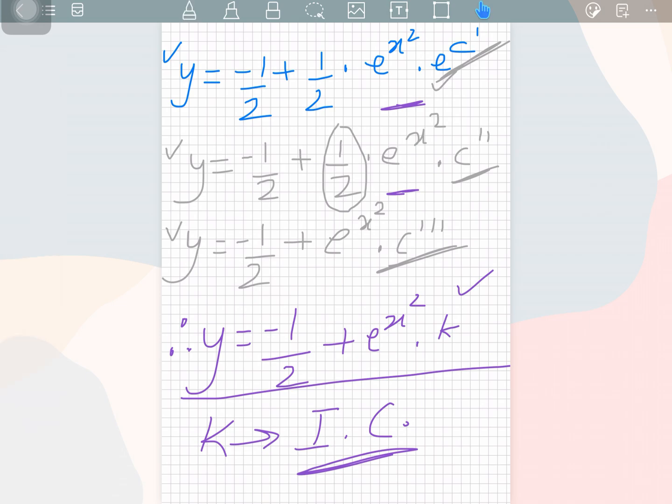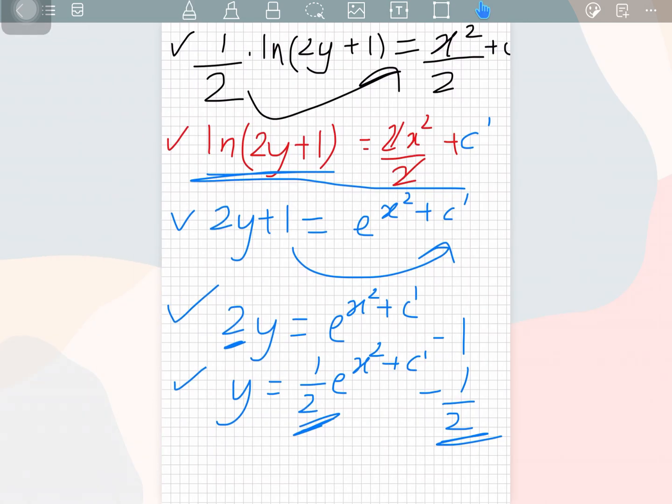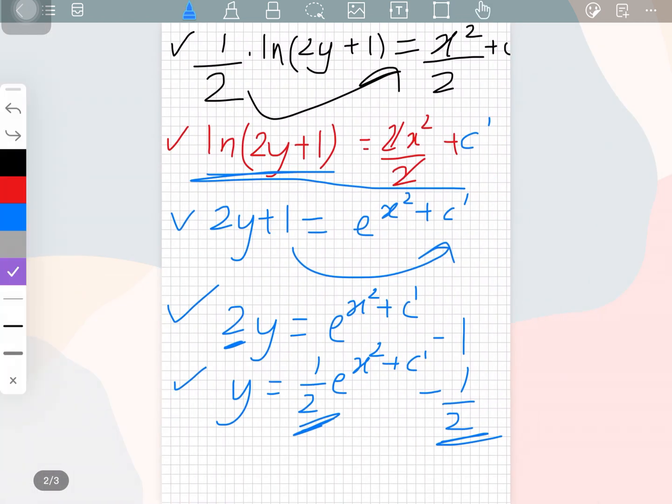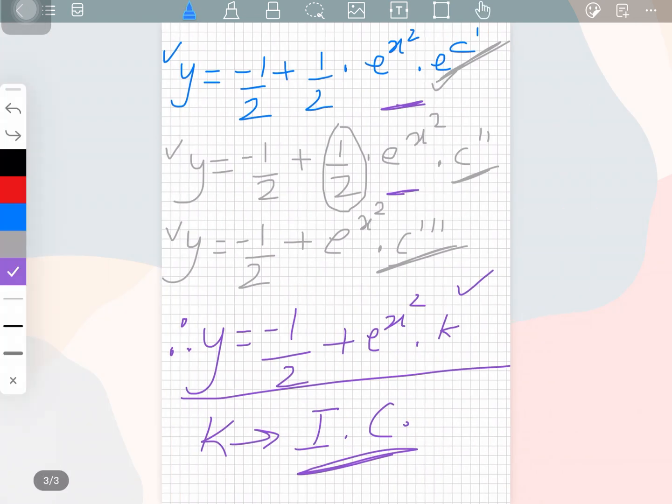So this process does not need any kind of formula or anything. It's just simple variable separation and using the property of logarithm and understanding how to represent constants. Here we made it c prime, here somewhere we've made it c double prime and here is c triple prime, and we have written c triple prime as k. Thank you for joining me on this one and hope to see you in my next videos. Thank you.